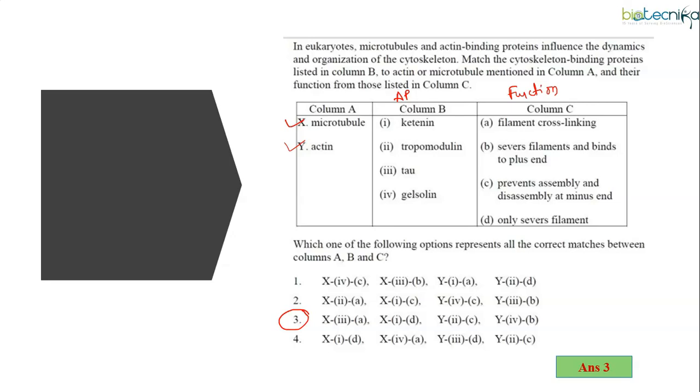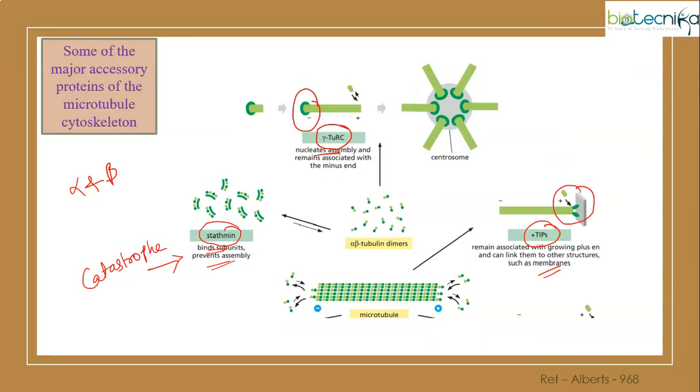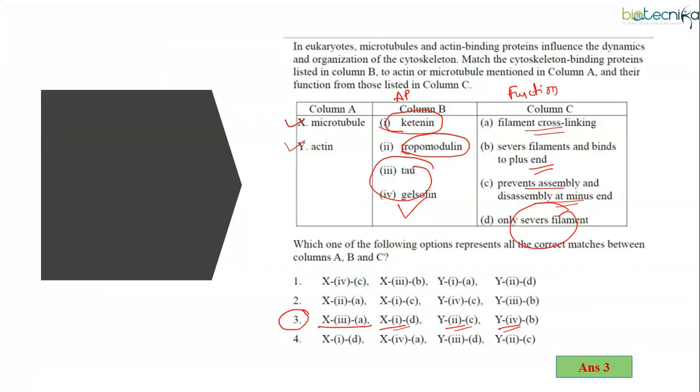The answer is 3. X3A: microtubule, tau protein involved in cross-linking of filaments. X1D: microtubule, catenine severs the filament. Y2C: Y-actin example is tropomodulin, prevents assembly and disassembly at minus end. Y4B: gelsolin, similar to catenine, severs the filament and binds towards the plus end. So you realize without remembering these protein examples it will be tough to get the answer.